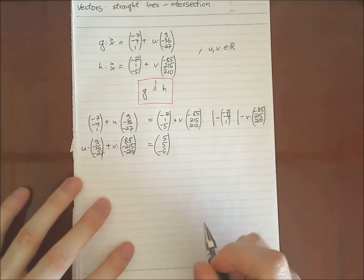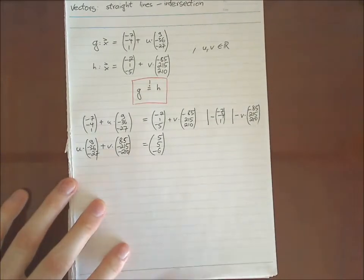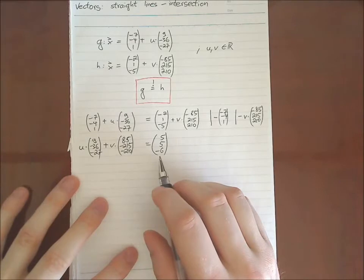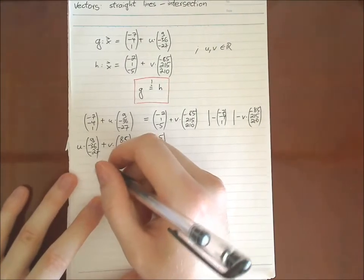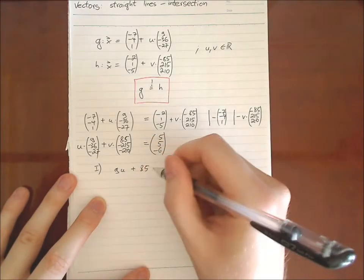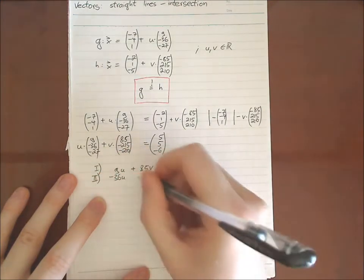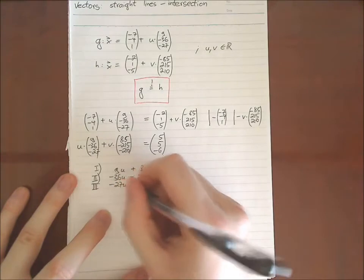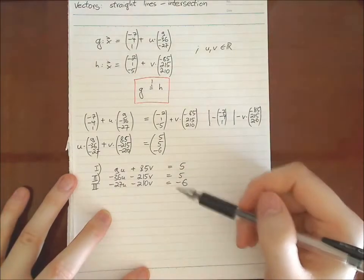And the way we are going to do this in this example, there's also another way, but I like to do this with a matrix, which is with a system of linear equations. So maybe I make one step more so that it may be clearer to you. So we have three equations: nine u plus 85 v equals five. Second one, minus 36 u minus 215 v equals also five. Third step, minus 27 u minus 210 v equals minus six.